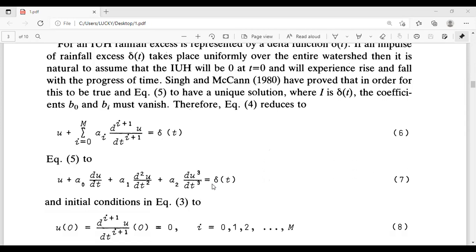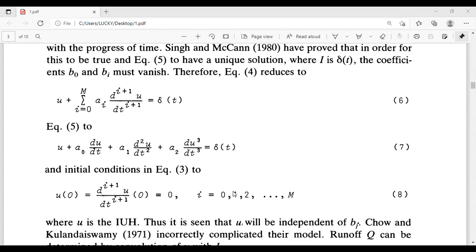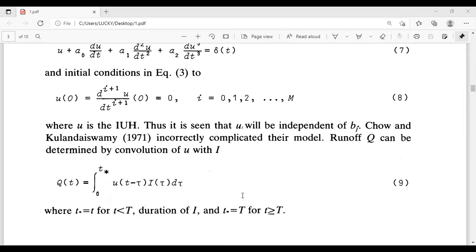U plus sigma i equals 0 to m, ai d^(i+1) u by dt^(i+1) equals sigma t. Equation 5 to u plus u0 du/dt plus a1 d^2 u/dt^2 equals delta t. And the initial condition in equation 3 to u(0) equals d^(i+1) u/dt^(i+1) equals 0, i equals 0, 1 to m. Where u is the IUH, thus it is seen that u will be independent.